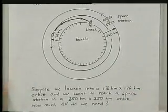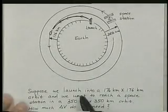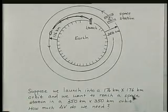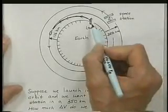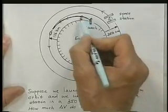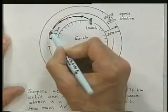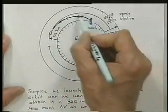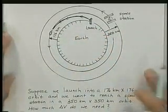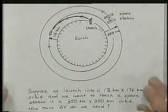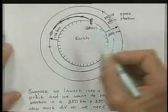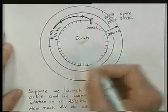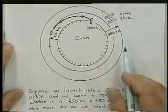Let's suppose that we have launched a vehicle into a 176 kilometer by 176 kilometer orbit. Here's our launch vehicle. We launch into this orbit and it's a nice circular orbit, 176 kilometers above the surface. And now that we're there, we want to transfer from this low circular orbit into the higher orbit that a space station happens to be in.